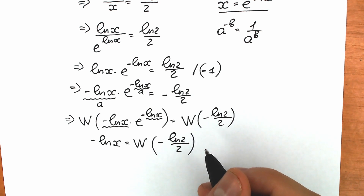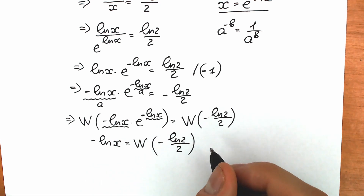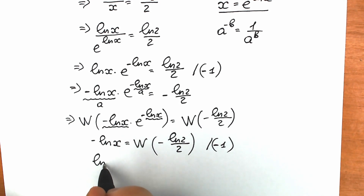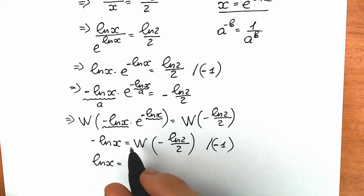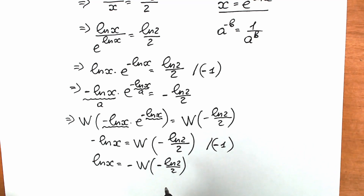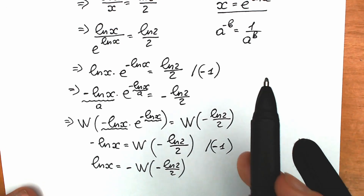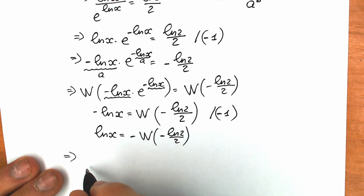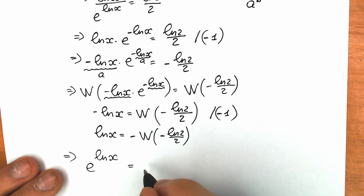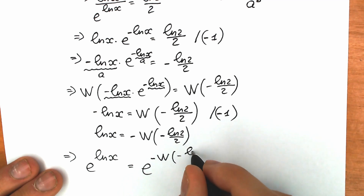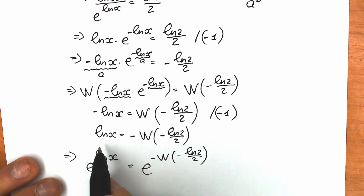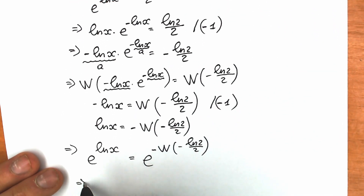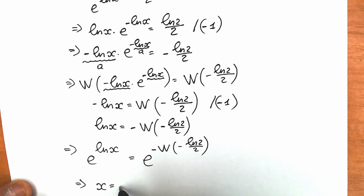Now let's find x. First, multiply both sides by minus 1: natural log x equals minus W of (minus natural log 2 over 2). Then, to isolate x, let's apply base e on both sides. e to the power natural log x equals e to the power of minus W of (minus natural log 2 over 2). Since e to the power of natural log x equals x, we have x equal to e to the power of minus W of (minus natural log 2 over 2).